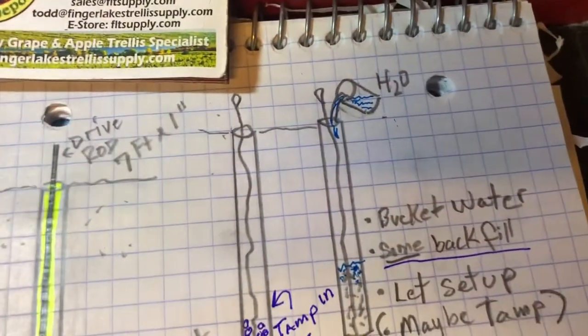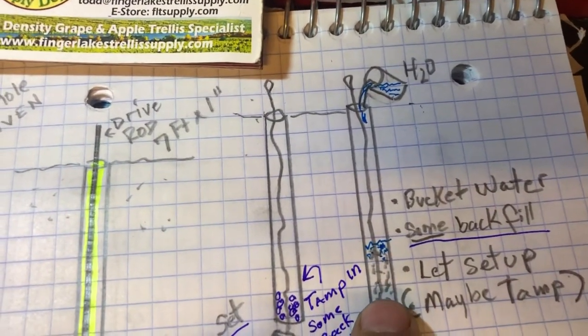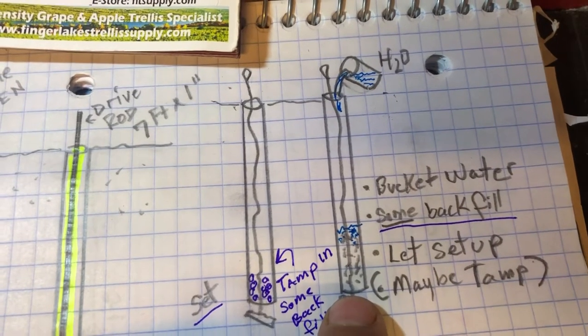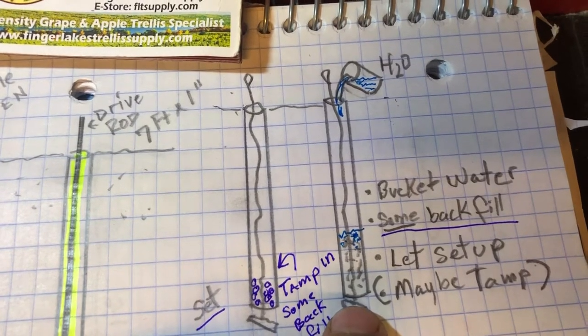Another trick you could do, because it's extremely dry, is a bucket of water down that hole with some material. But just let it sit, like perhaps overnight let it sit before you go pulling that anchor to set it.